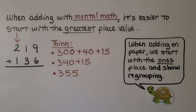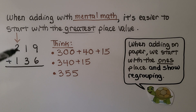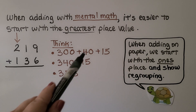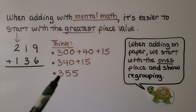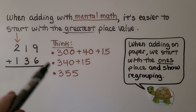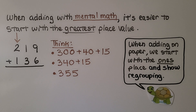When adding with mental math, it's easier to start with the greatest place value. For example, 200 plus 100 gives us 300, then we add 40, then 15, giving us 300 plus 40 plus 15, which is 340 plus 15, that's 355. When adding on paper, we start with the ones place and show regrouping. With mental math, it's easier to start with the greatest place value, then add going towards the ones.